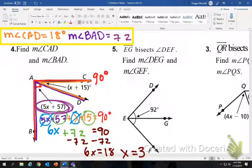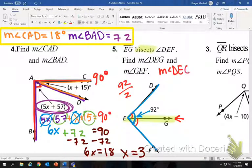This next question, it says EG bisects angle DEF. Find the measure of DEG and the measure of GEF. So if you look, it says 92 and then has this long arc. This means the entire angle is 92 degrees. So because it is bisected, it is cut in half. This angle, this 92 degrees is cut into two congruent pieces. So we're going to take 92 and divide by 2. 92 divided by 2 is 46. So we're going to say the measure of angle DEG and the measure of angle GEF. They're both 46 degrees.